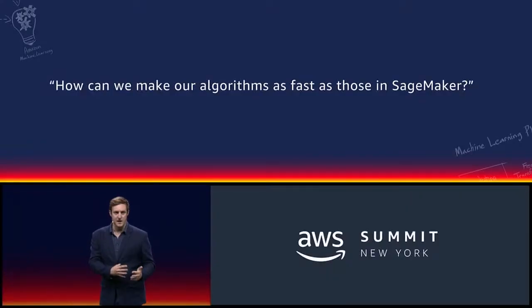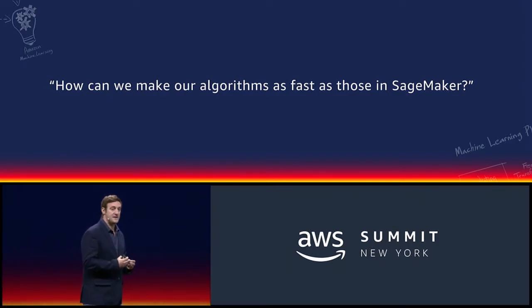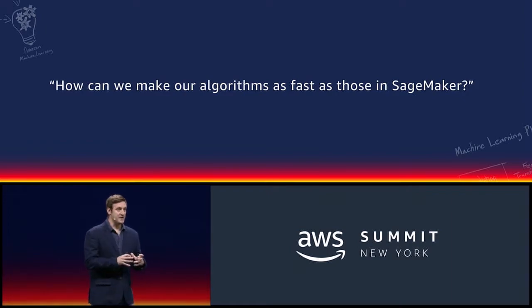One of the things we hear from customers is, how can we make our own algorithms — algorithms that our data scientists and developers are building for our own business — as fast as the ones inside SageMaker? And the truth is, today, this is kind of cumbersome. You can do it, but it's very, very difficult to get right. It's very hard to get the performance, and it involves getting really into the weeds on a whole bunch of low-level C++ code. Nobody's got time for that.